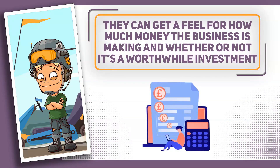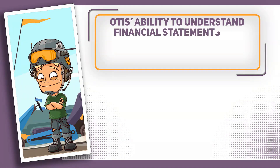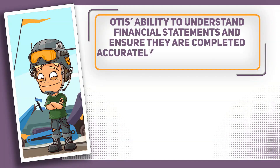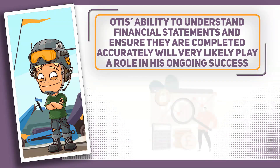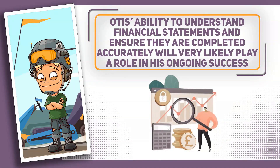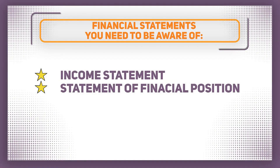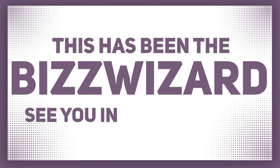So there you have it — you should now understand how to read a statement of financial position. For an entrepreneur like Otis, his ability to understand financial statements and to ensure that they are completed accurately will play a role in his ongoing success. That's two of our three important financial statements down: the income statement and the statement of financial position. In our next video we will look at our final financial statement, the cash flow statement. Until then, this has been the BizWizard. See you in the next video.